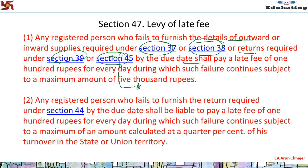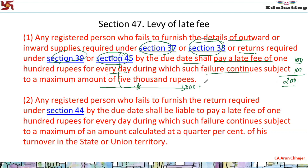If they fail to furnish by the due date, they have to pay late fees of ₹100 per day under CGST and ₹100 per day under SGST — a total of ₹200 per day — subject to a maximum of ₹5,000 under CGST and ₹5,000 under SGST, making the total maximum ₹10,000. This is exactly what was happening practically. For Section 45 (GSTR 10 — the final return), if not filed for a long time, one had to pay ₹10,000 as late fees before the return could be filed.